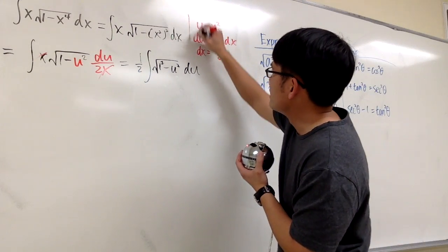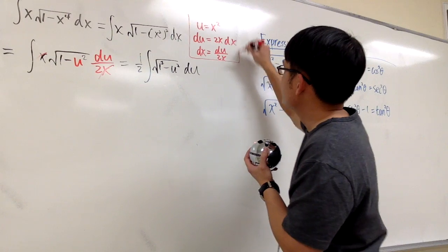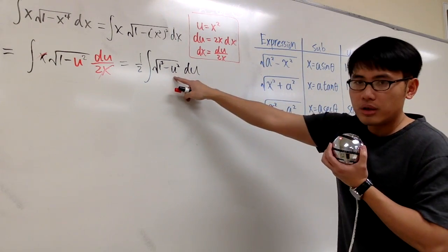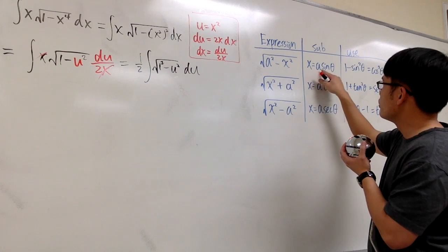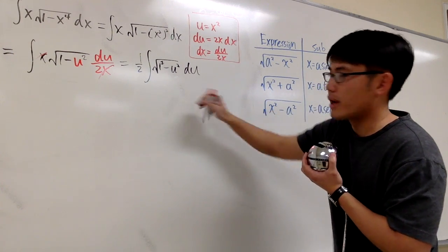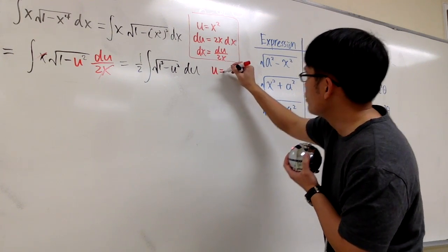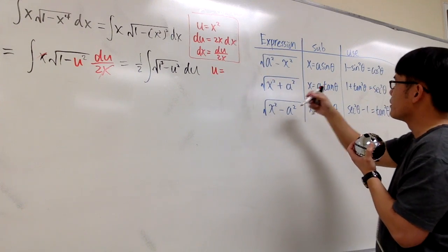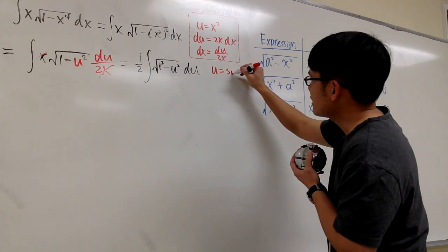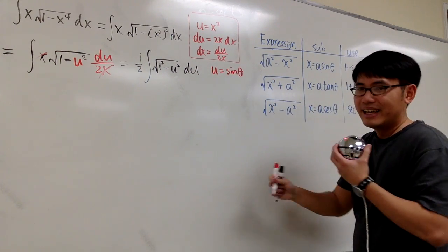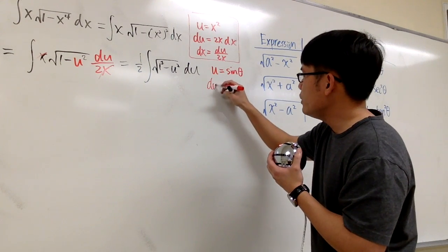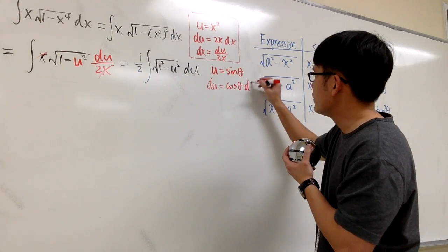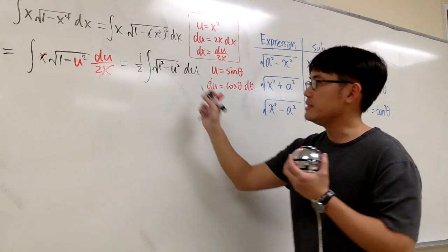To do that, let's box this part. We let u equal — since a equals 1 — u equals 1 times sine theta. Differentiating both sides, du equals cosine theta d theta.